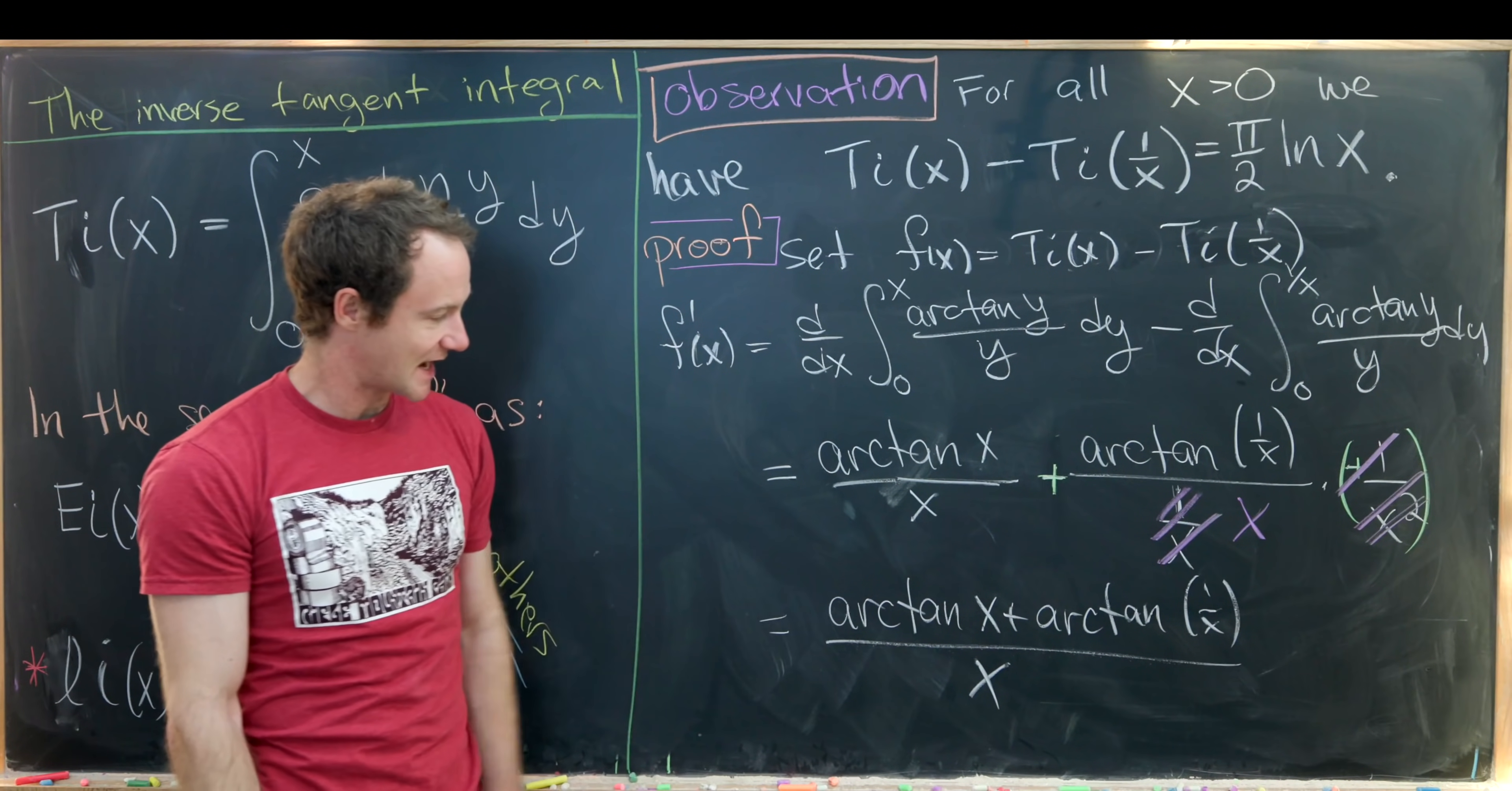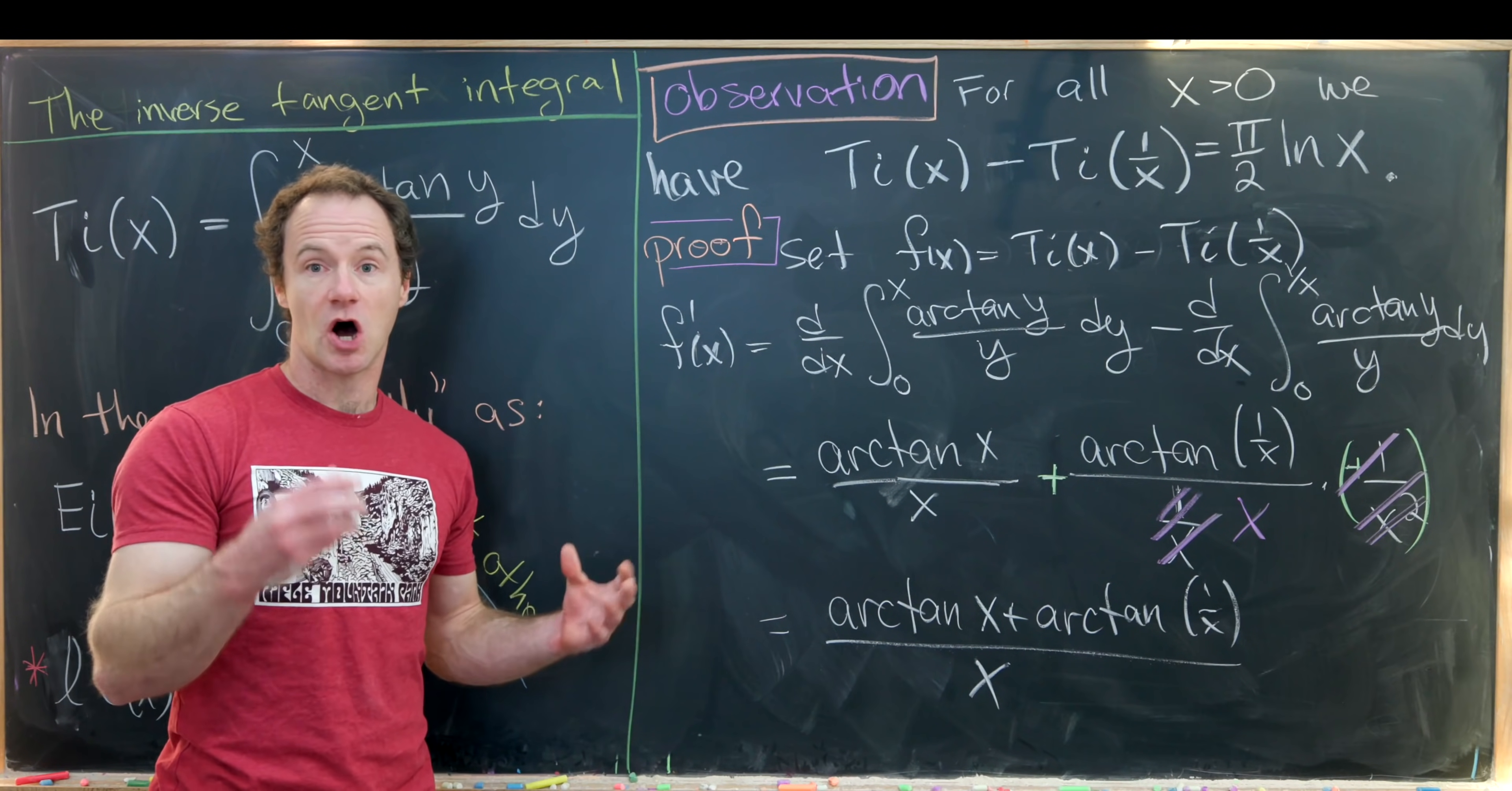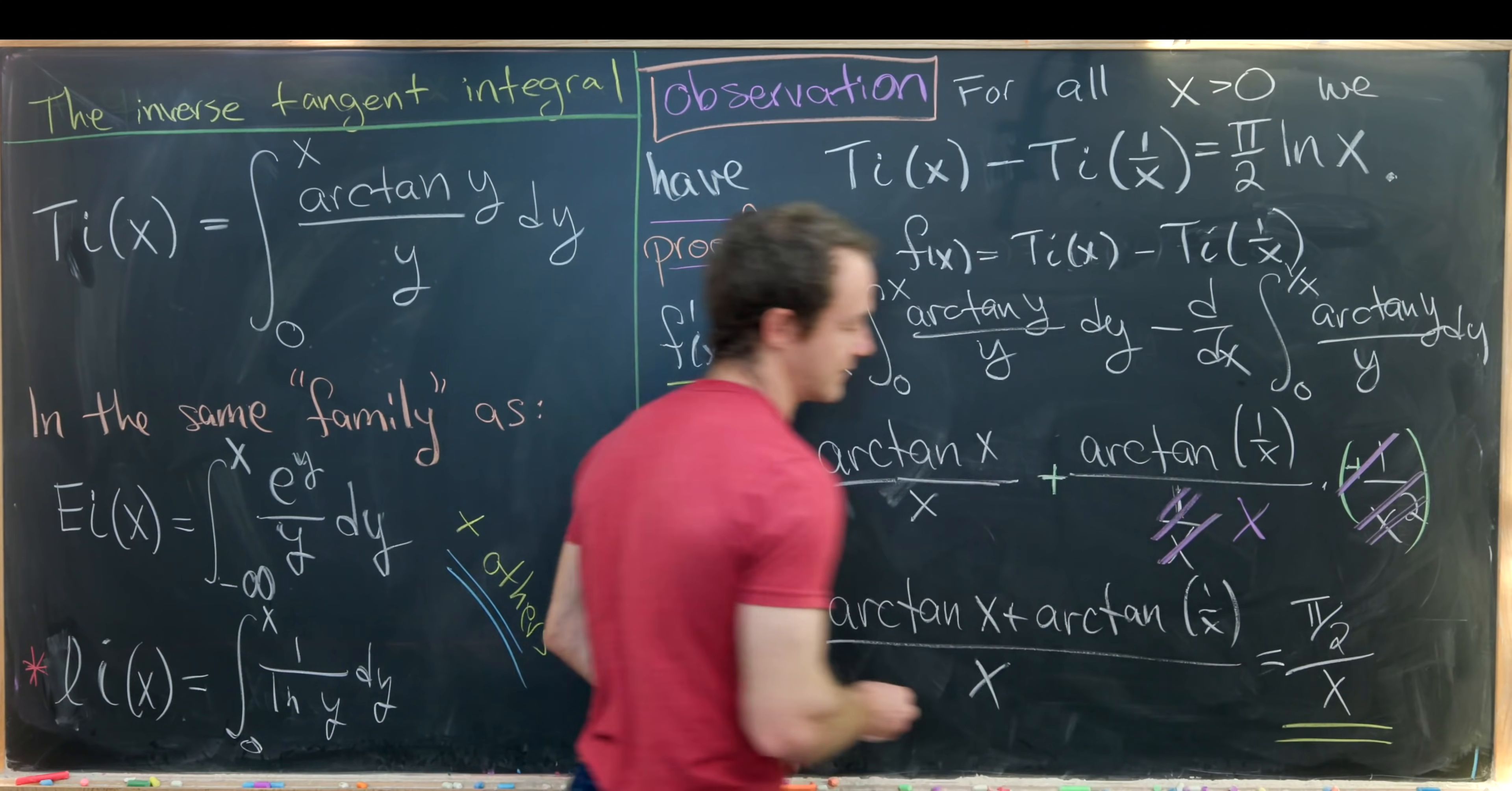Now there's actually a nice identity for arctan of x plus arctan of 1 over x, and that in fact is equal to pi over 2 all of the time. There's a neat little geometric proof which involves making a right triangle with side length 1 and side length x and then taking the tangent of the non-right angles in that triangle and then forming some sort of equation that will imply this. Okay, so we can replace this arctan of x plus arctan of 1 over x with pi over 2, so we have pi over 2 over x. Okay, so that means we've got f prime equals pi over 2 over x.